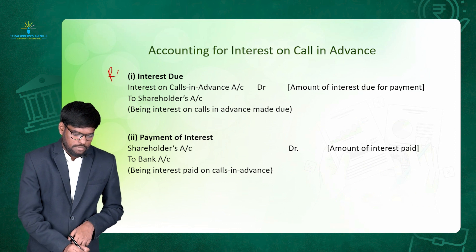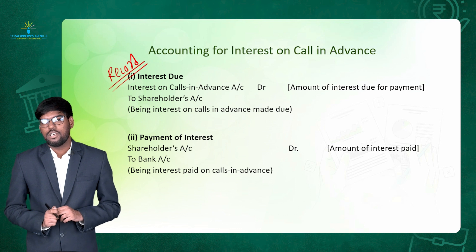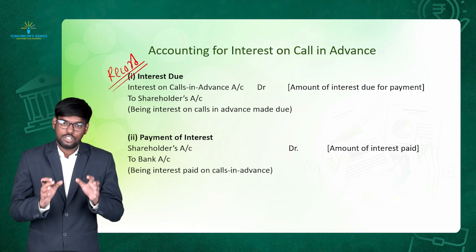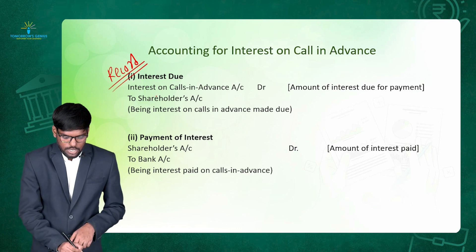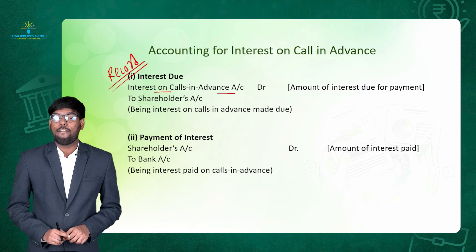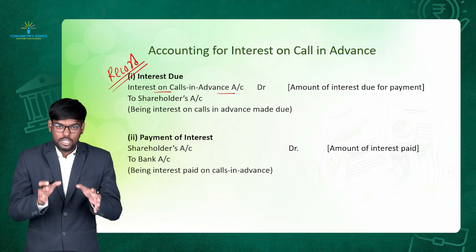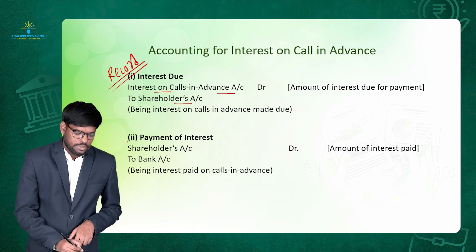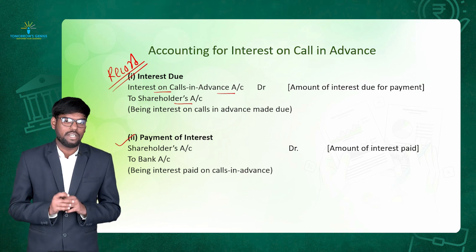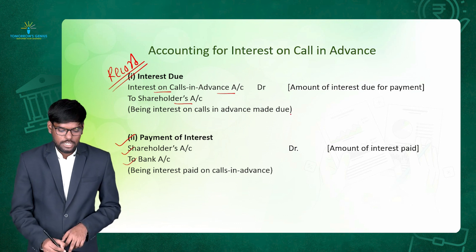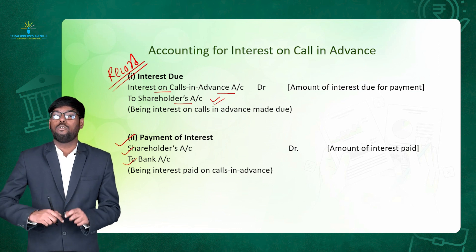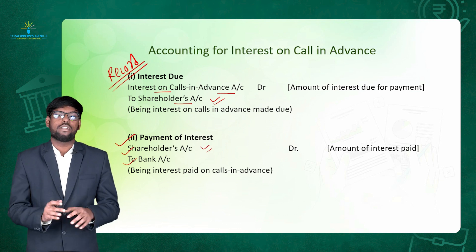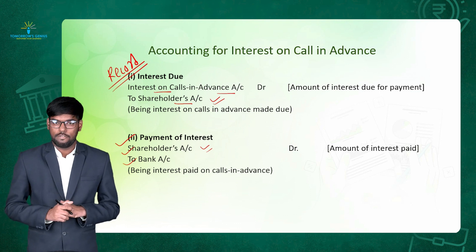First, we record that we have to pay interest on call in advance. The entry is: Interest on Call in Advance Account debit to Shareholders Account. We debit interest on call in advance because it is an expense for the company — the rule says debit all expenses and losses. We credit shareholders account because shareholders are creditors for us here. After passing the recording entry, the next entry is for payment of interest: Shareholders Account debit to Bank Account. In the previous entry, we credited shareholders because we owed them interest on call in advance — now when we pay, we debit shareholders to settle that account.